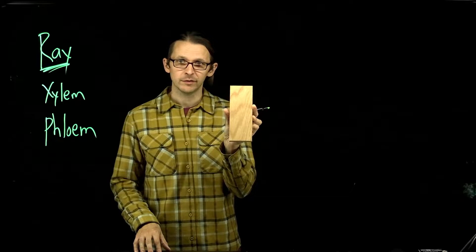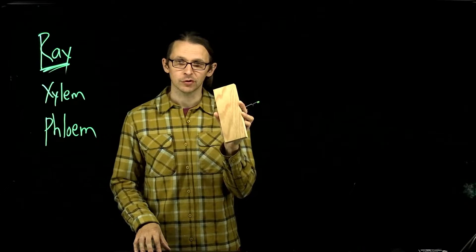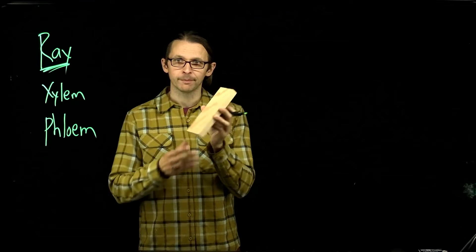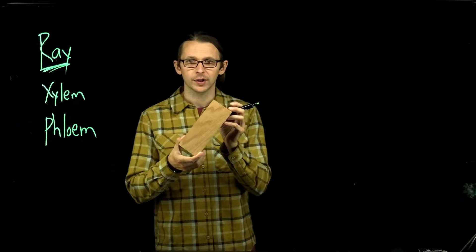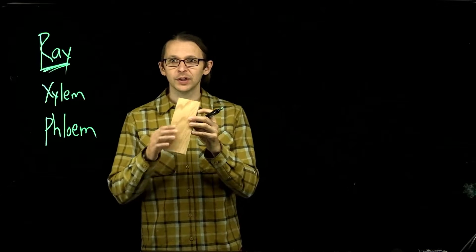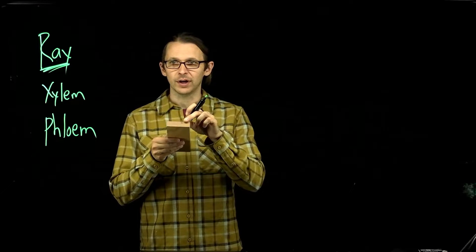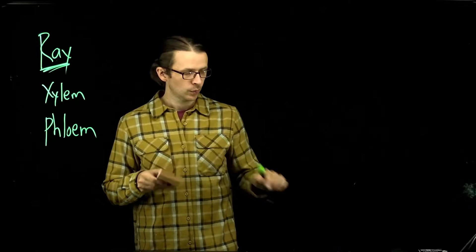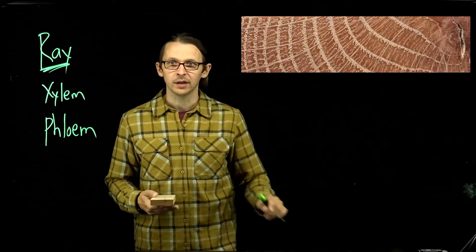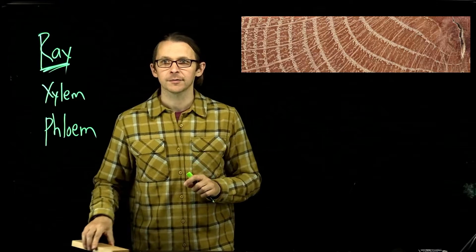This is a piece of oak — a scrap from my wood shop. This happens to be red oak. If we look at the end grain of this red oak board, we would see something like this.